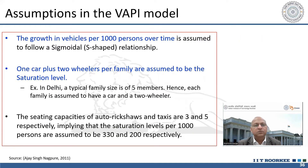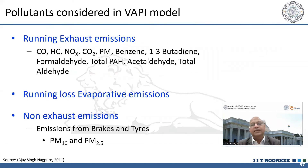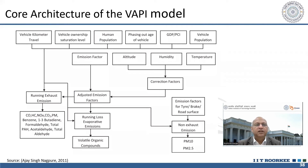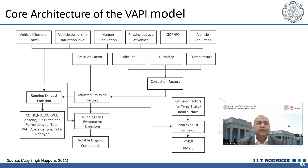WAPI has certain assumptions — like vehicle growth rates and saturation values. It can estimate exhaust emissions including CO, hydrocarbons, NOx, CO2, particulate matter, benzene, butadiene, formaldehyde, total PAH, and SLTI. Some non-exhaust emissions can also be estimated. The core architecture of the WAPI model shows all the values needed for calculation, and the flowchart explains how the model works.